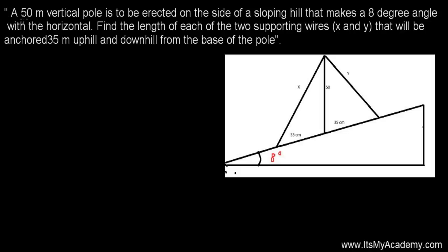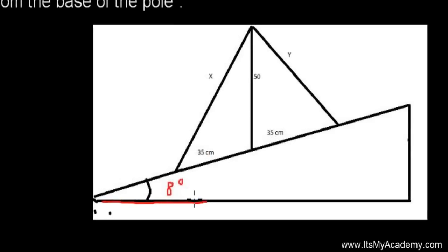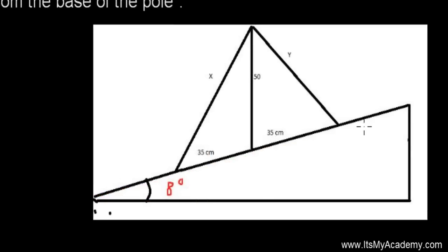Let me read you the question. A 50-meter vertical pole is to be erected on the side of a sloping hill that makes an 8-degree angle with the horizontal. So this is the horizontal line and this is the slope of the hill.